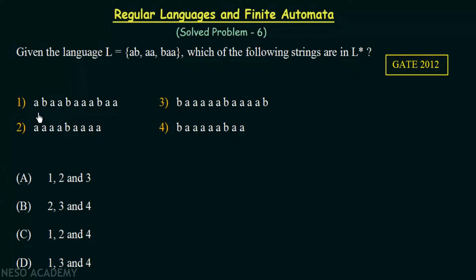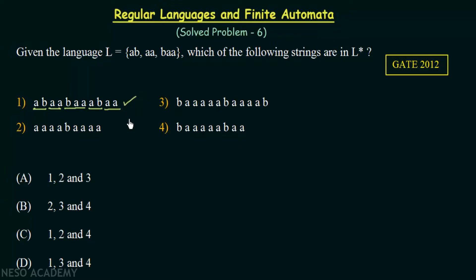Let us start from option number 1. The string is ABAABAAABAA. First we have AB, which is in the language — that's fine. Then we have AA, which is also in the language. Then we have BAA, which is also in the language. Then AB again, which is in the language. And finally AA, which is also in the language. So option 1 can be formed correctly and this string is in L closure.